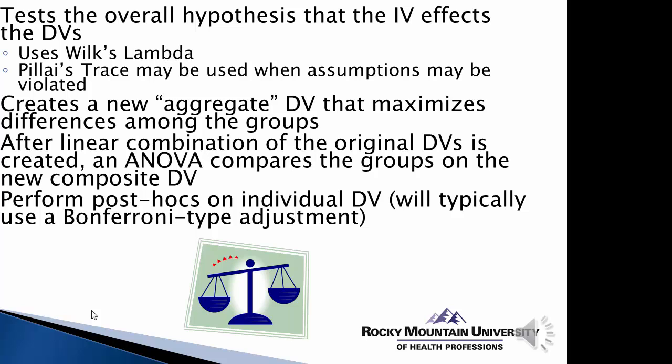After that linear combination of the dependent variables is created, the second step is a separate ANOVA that compares the groups on that new composite dependent variable. If there is significance, then a post hoc is performed on each individual dependent variable. So after looking at whether there's significance for all variables together, we can then look at whether one variable might be creating more of that significance than another — for example, does the treatment affect outcome A more than outcome B or outcome C? There could be overall statistical significance, but perhaps one or two outcomes driving that significance more than others.